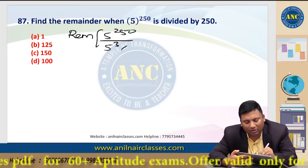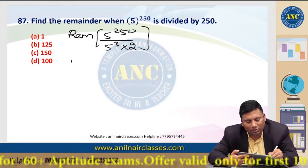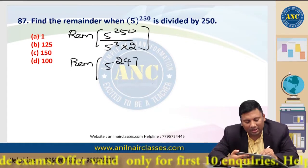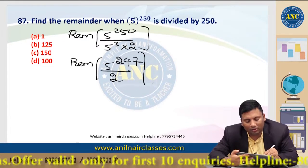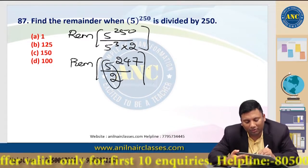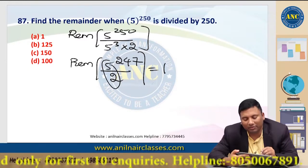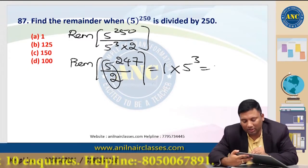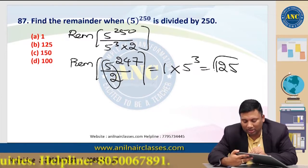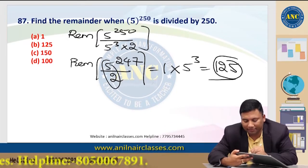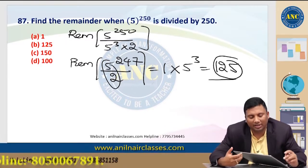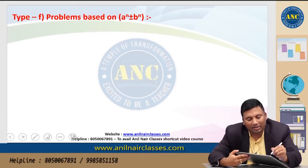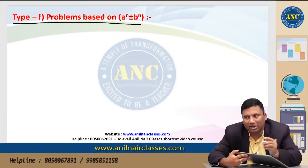87th question: 5^250 divided by 250. 250 = 125 × 2 = 5^3 × 2. So 5^250 ÷ (5^3 × 2) = 5^247 ÷ 2. Remainder for 5^247 ÷ 2 is 1. Then 1 × 125 = 125. Answer is 125.